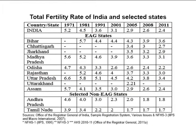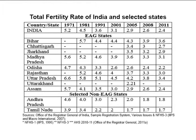Bihar and UP have had the highest TFRs throughout the historical period. A declining trend is prevailing in all of the EAG states and the two non-EAG states, with different trajectories. The slowest decline was recorded in Bihar during three decades, while other EAG states registered a moderately healthier decline of more than 40% during the referenced period. In the last decade, fertility in both of these states has plateaued in the range of 1.7 to 1.8.